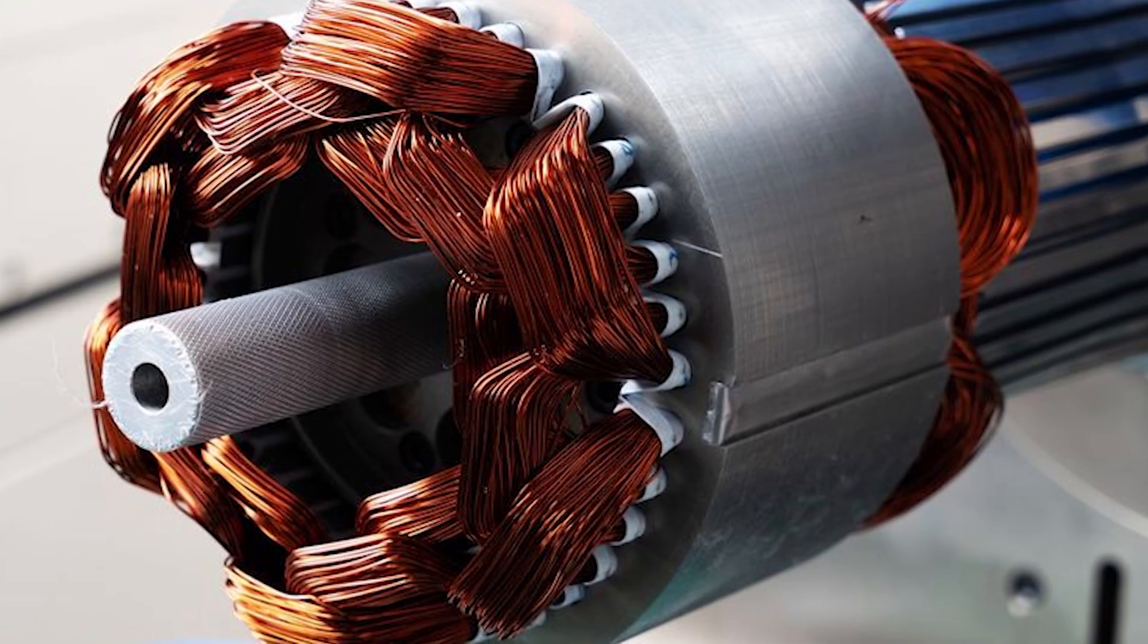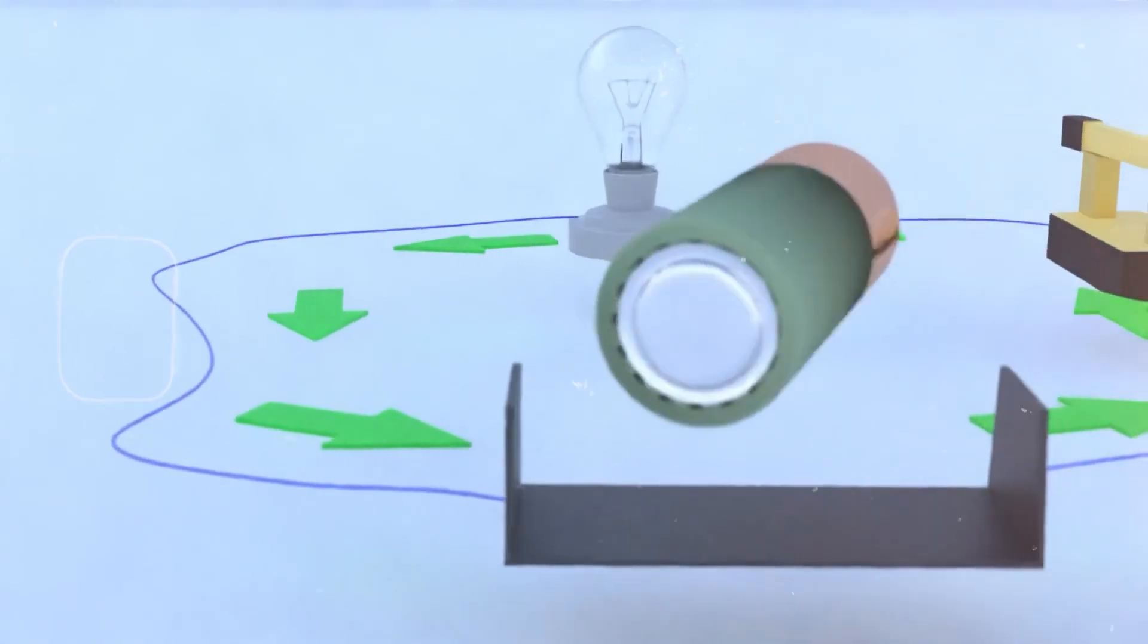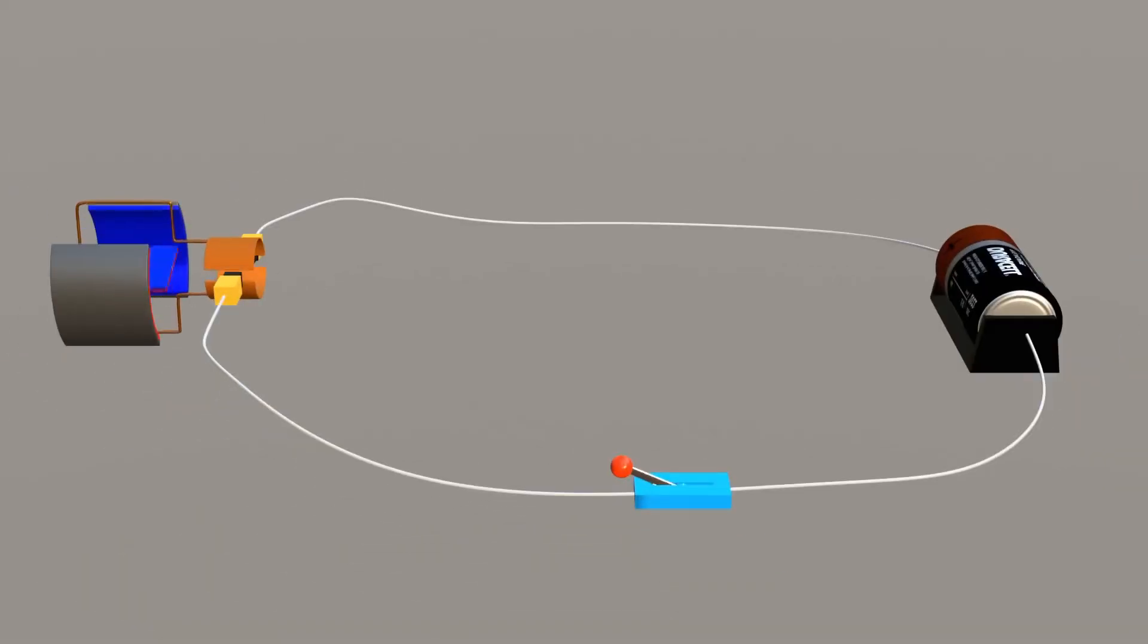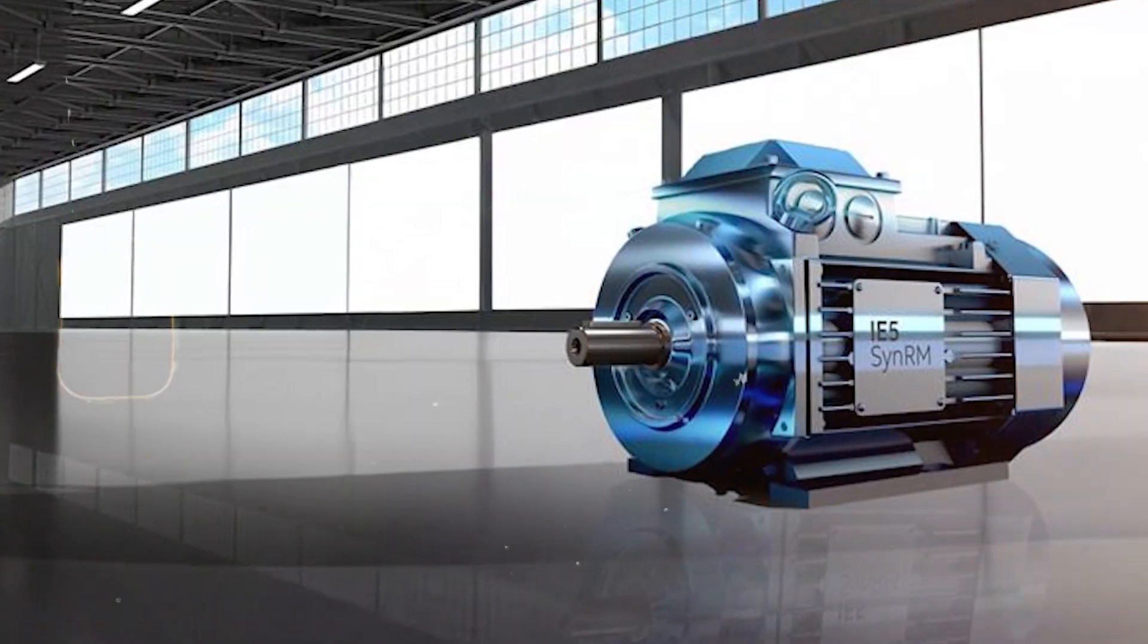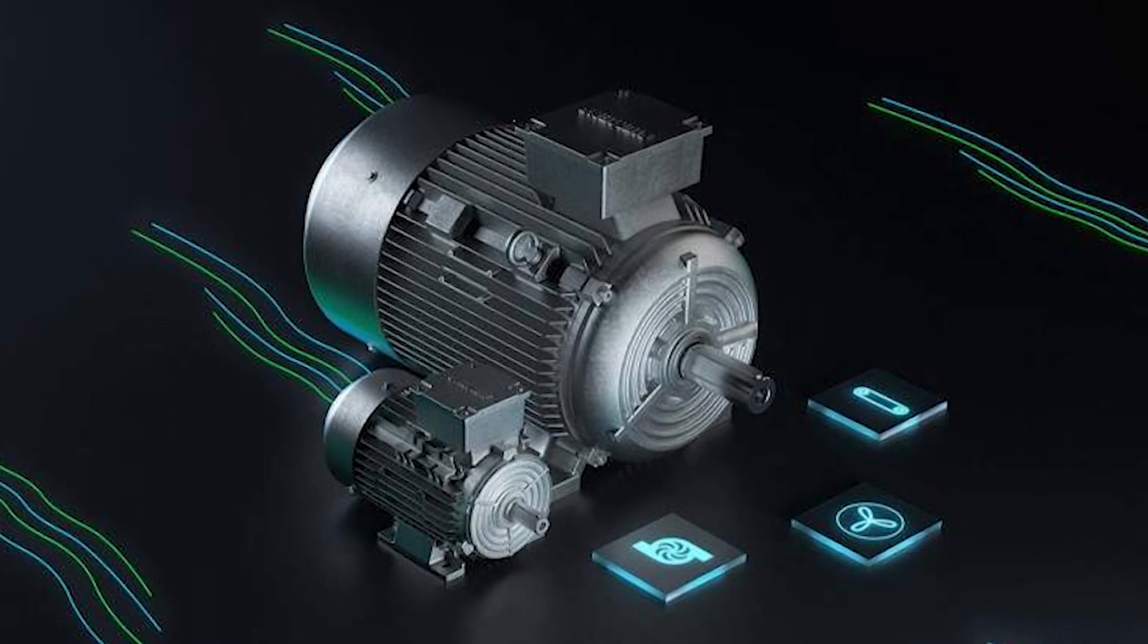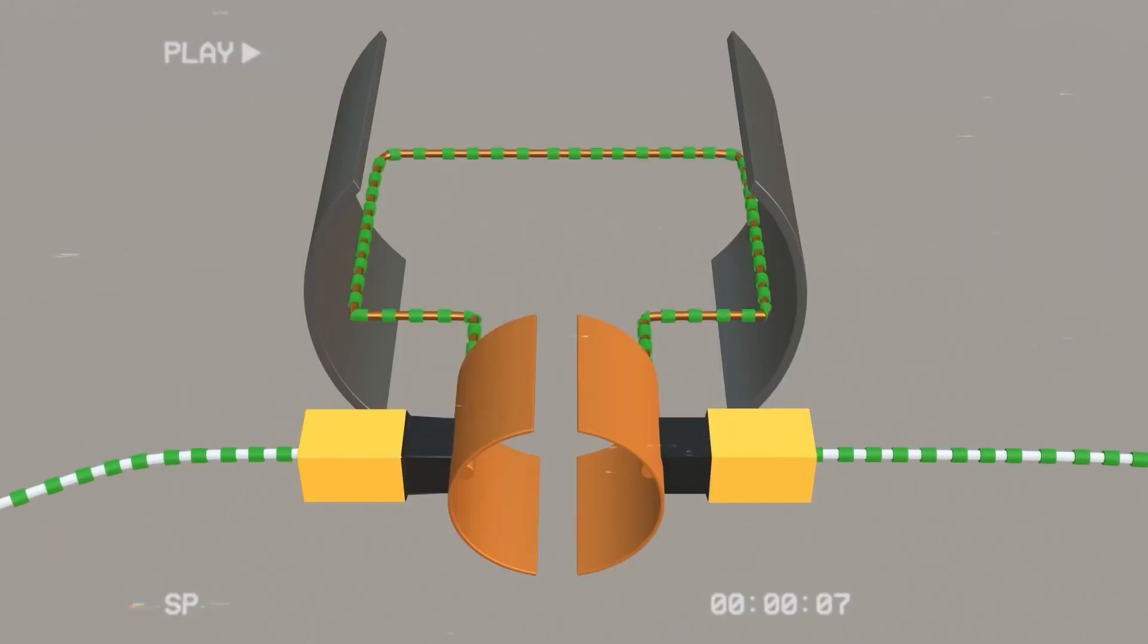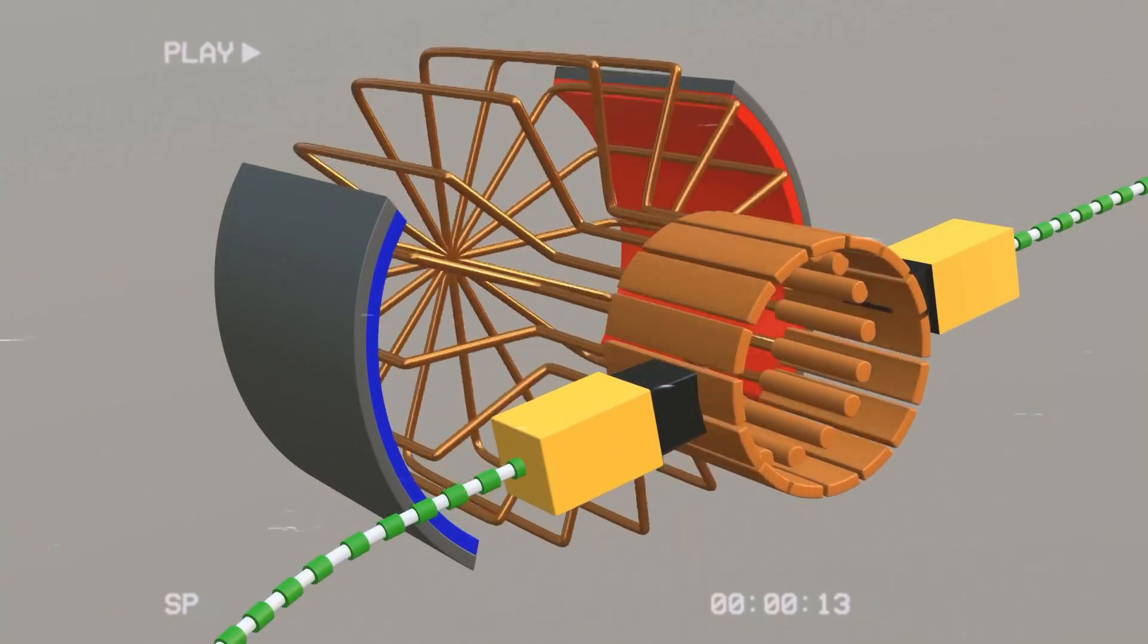The design described so far is a direct current, or DC motor. Whenever a device is powered by a battery and requires movement, there is a strong chance a DC motor lies inside. Other motors, such as alternating current AC motors or brushless designs, exist as well, each using variations of the same principle. Yet at their core, they all exploit the intimate relationship between electricity and magnetism to produce continuous rotation.